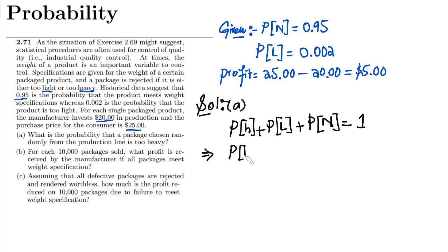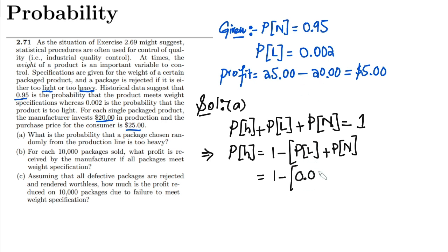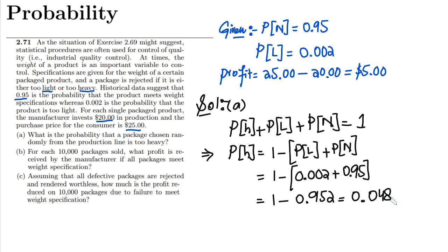To find P(heavy), it equals 1 minus the probability of lightweight plus the probability of normal. Substituting values: 1 minus (0.002 + 0.95) = 1 minus 0.952, which gives us 0.048. So 0.048 is the answer to part A.